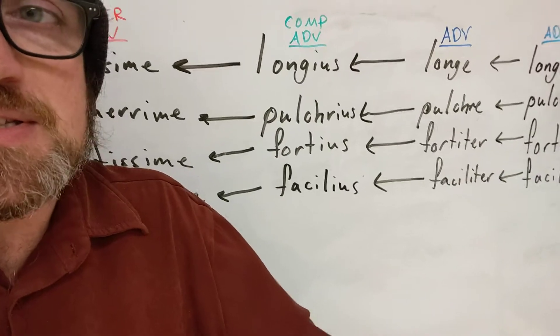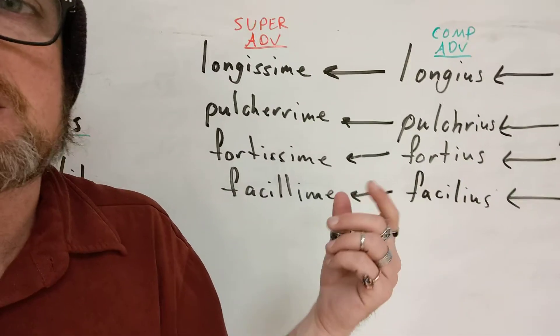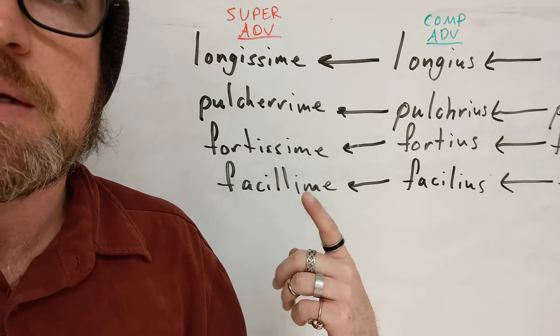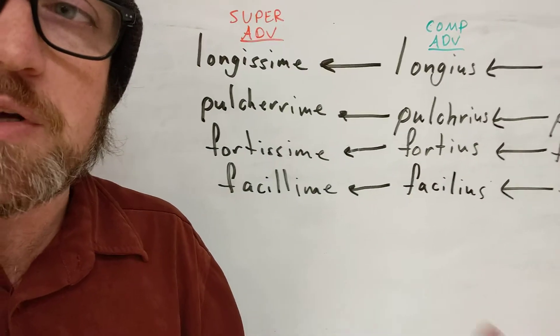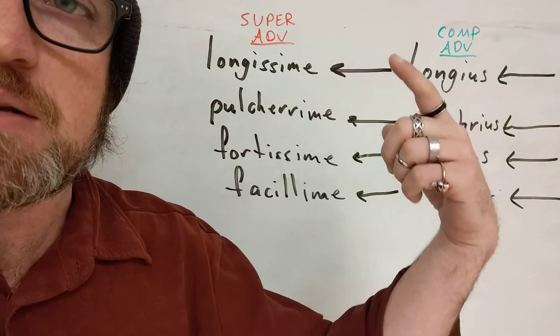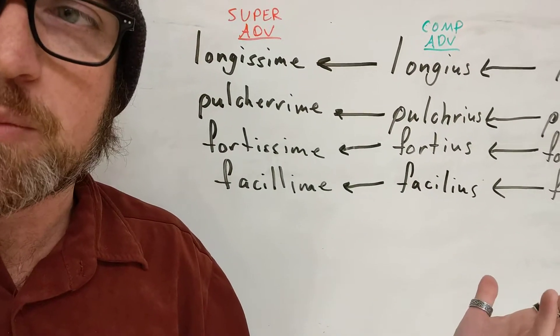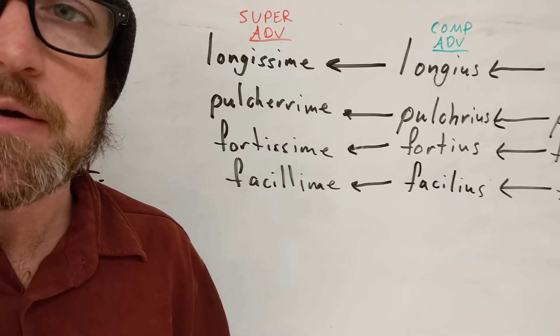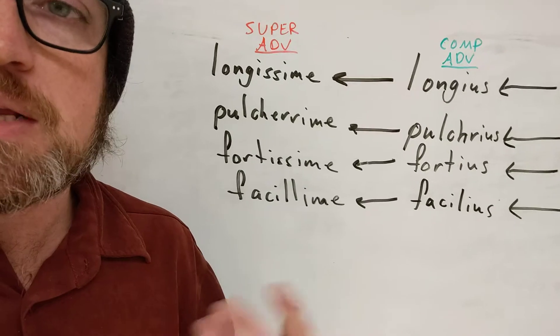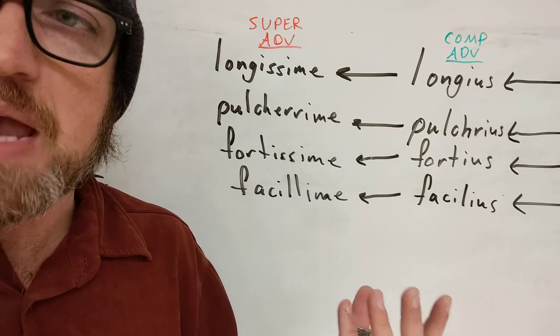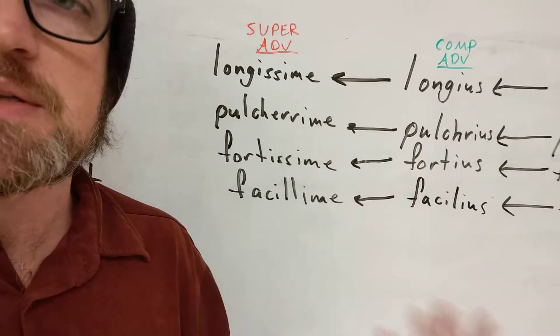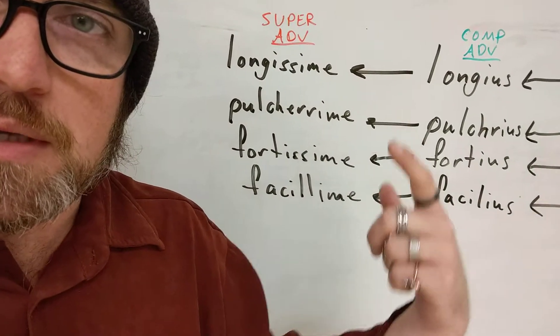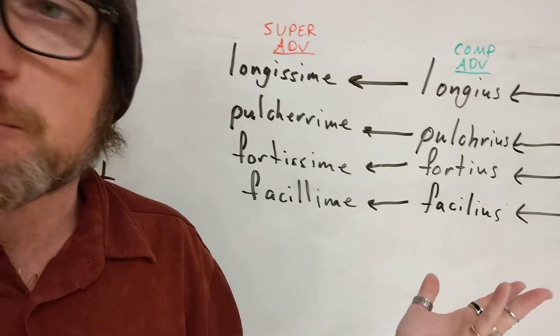And actually the process is the same if it's a superlative. If you want to say something was done most distantly or most beautifully or most bravely or most easily, you just do whatever you would have done for the adjective, except it's going to end in e instead of some form of us, a, um. That's literally it. There's nothing else to know about it. And that even applies if it's one of those adjectives that had a double r or a double l instead of issime. Well, it's still going to be that way, just with an e at the end instead of an us, a, um or some other case.